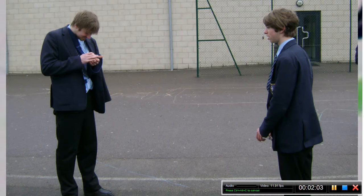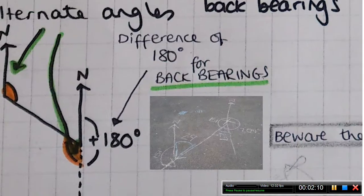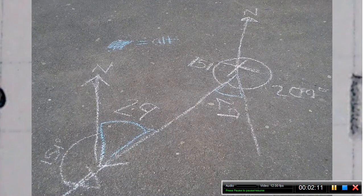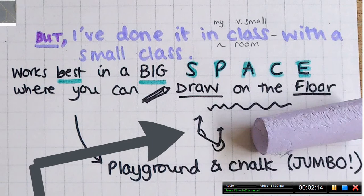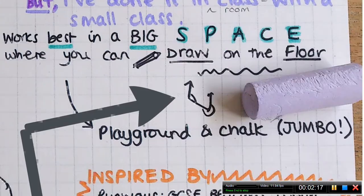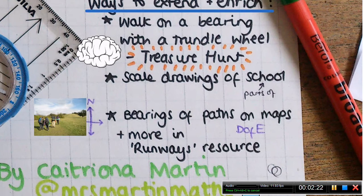They completely understood what they were and how to use them. I think it works best in the playground, but you can do it in a small classroom, which I have done with a smaller class. You could use masking tape or metre rulers instead of chalk on the ground. There's plenty of scope for enriching and extending this even further — if you've got any more ideas, I'd love to hear them.